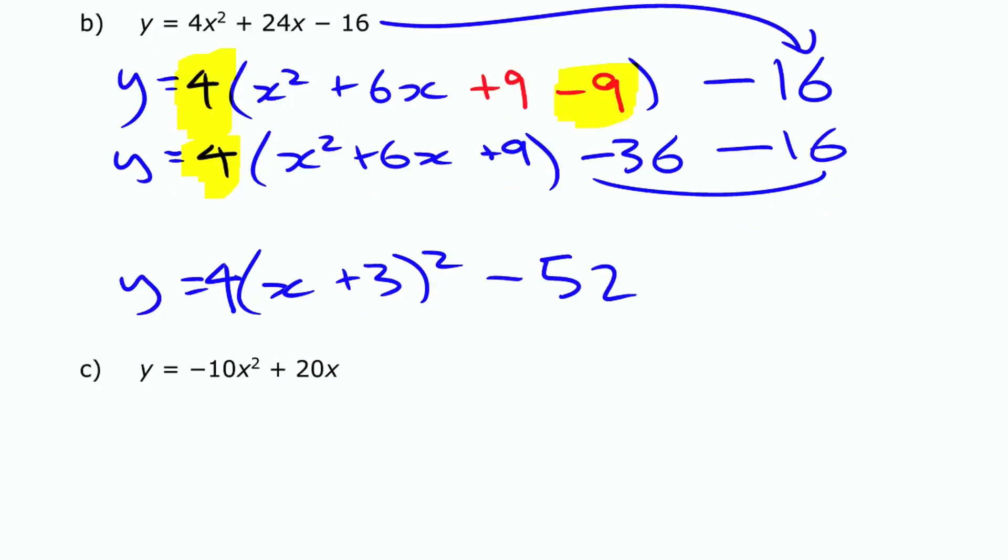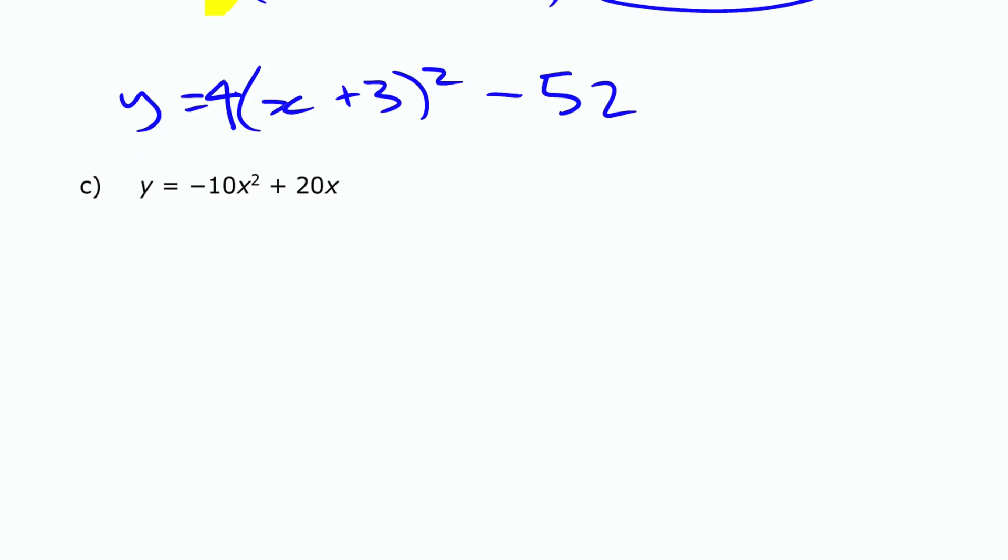We'll do this last one here. Same thing, this has a coefficient out in front. To deal with that, best thing to do is to factor it out. Now there's no constant term on the end like I had in my previous two; that actually almost makes it easier because we don't have anything to combine at the end. There's my minus 10. I'm going to factor it out. If I factor it out of plus 20x, this actually needs to be a minus 2 here. Leave some space for my numbers that I'm going to need to have there.